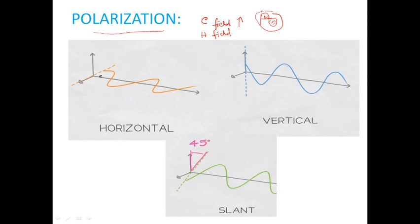From these diagrams we can understand it very clearly. Taking this example, here we have a y-component and an x-axis component. Looking at this diagram, the change of the wave is along only one direction — it is changing along the x-axis — which we call the horizontal direction. This change we call horizontal polarization. In the second case, you can see clearly the change is in the vertical direction — straight in the upward direction — and this is called vertical polarization.